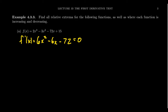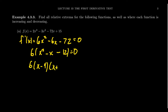We notice that the coefficients 6, 6, and 72 are all divisible by 6. We can factor out the 6, leaving behind x² - x - 12. We need to find factors of negative 12 that add up to negative 1, which gives us negative 4 and positive 3. So we factor this as (x - 4)(x + 3) = 0, giving us two critical numbers: positive 4 and negative 3. As it's a polynomial, the domain is all real numbers, so there are no domain issues.